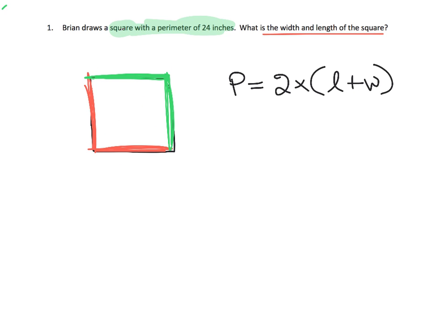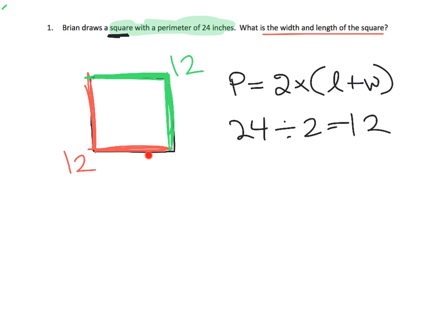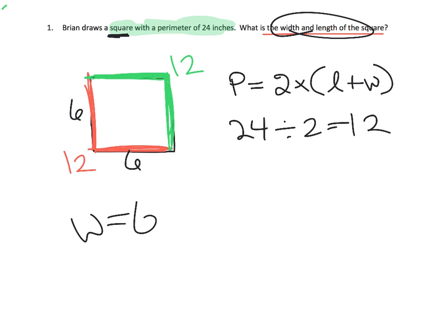The length plus the width has to equal 12, and the other length plus width also has to equal 12, because 12 plus 12 is 24 — that's the perimeter we want. So 24 divided by 2 equals 12, meaning each pair — length plus width — has to equal 12. Now, since it's a square, the length and the width have to be the same. If they have to be the same and they have to equal 12, that means each side is 6. So the width equals 6 inches and the length equals 6 inches.